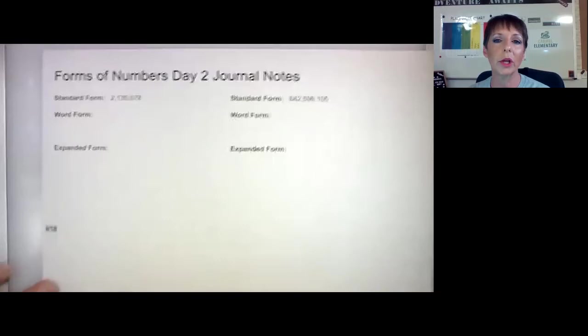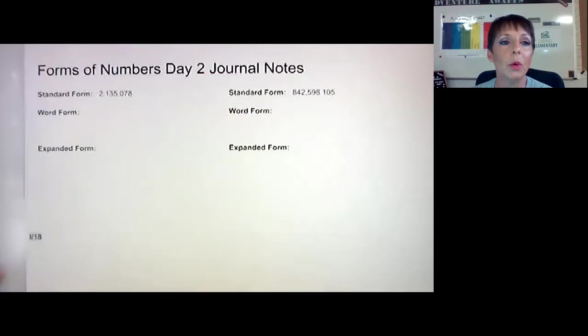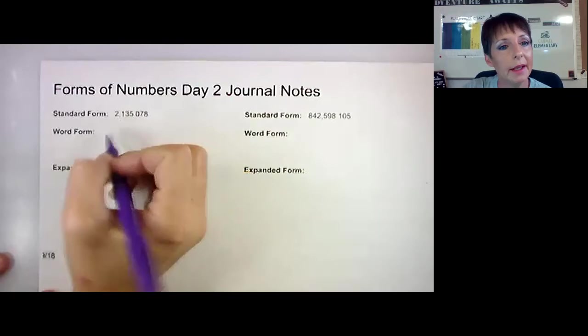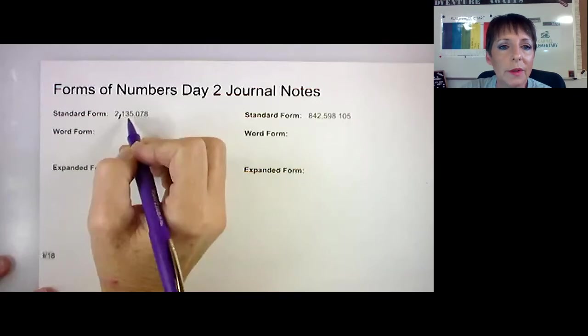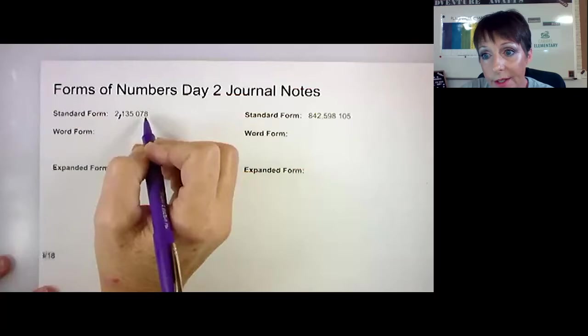Yesterday we talked about the word form, the standard form, and the expanded form for writing a number, and we're working really primarily with the decimals. So I'm just going to go over two more examples with you today. Remember, we write what we say. So whatever we say for the number, that's how we write it out. If there's a comma in the number, we put a comma in the word form. And the decimal always means the word 'and'. This one is 2,135.078 thousandths.